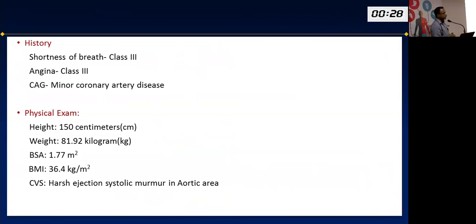On the topic of aortic regurgitation: TAVI is currently not an option for pure AR. The reasons are that AR patients tend to have a very large annulus for which current available valve sizes are inadequate, and some calcification is needed for the valve to anchor. A patient with combined aortic stenosis and AR with some calcification could be an ideal candidate, but pure AR without calcium cannot currently be offered TAVI — surgery would be the standard.